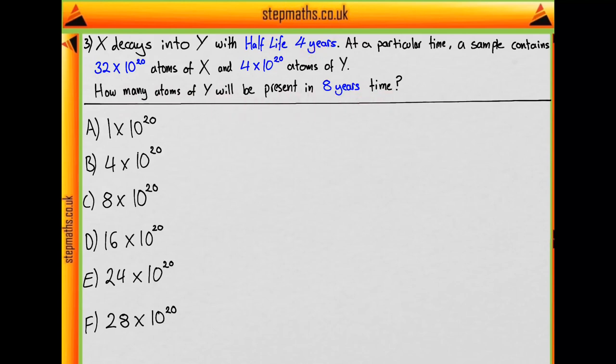We know the half-life is 4 years, so in 8 years there will be 2 half-lives. In our first half-life, the amount of X reduces by half, so we'll get 16 times 10 to the 20 atoms of X.